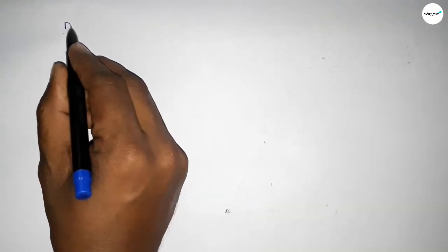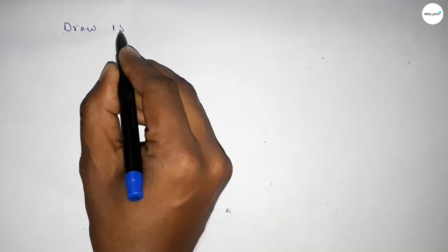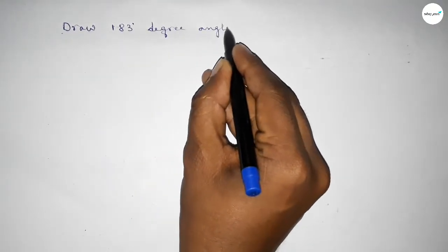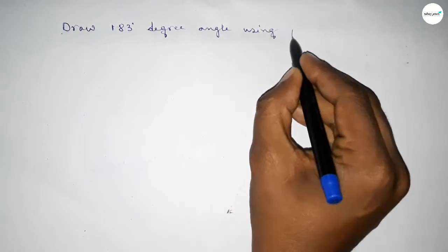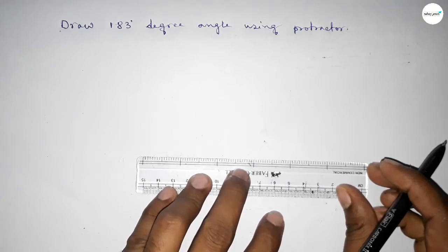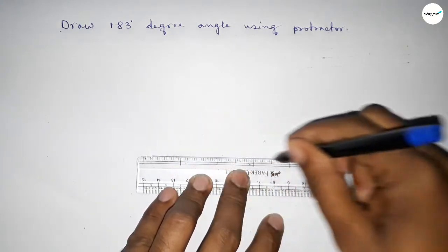Hi everyone, welcome to essay share classes. Today in this video we have to draw 183 degree angle by using protractor. So let's start the video. First of all, we have to draw here a straight line of any length.